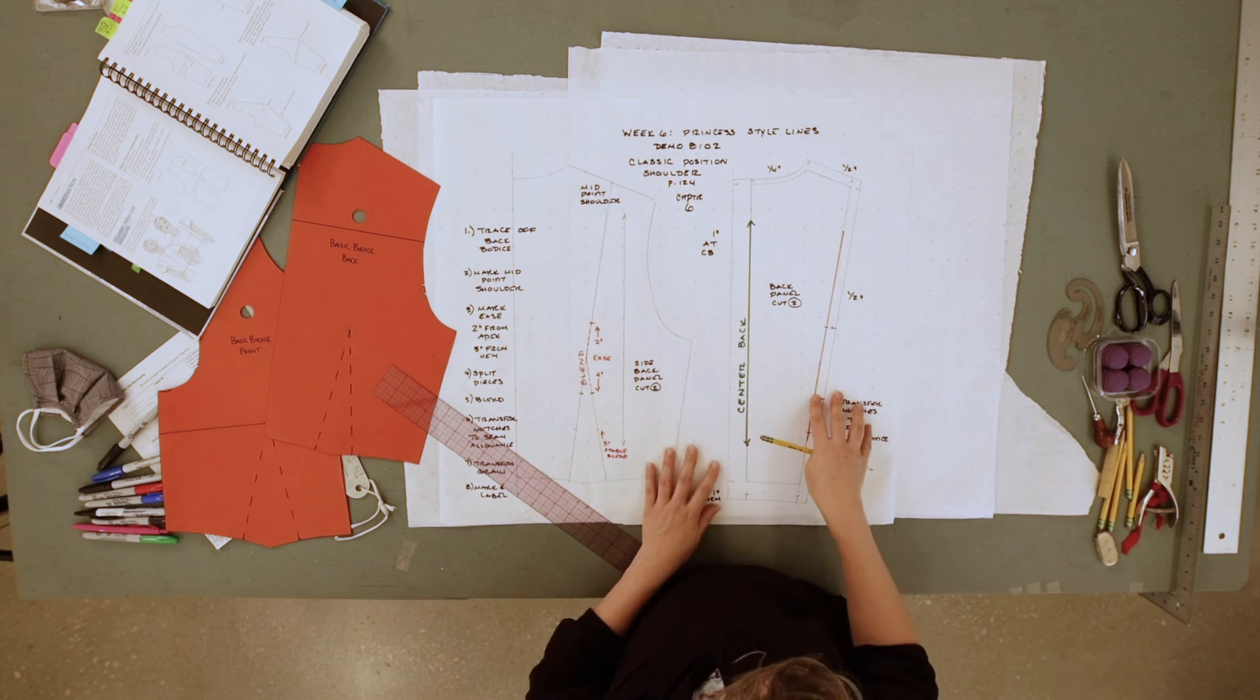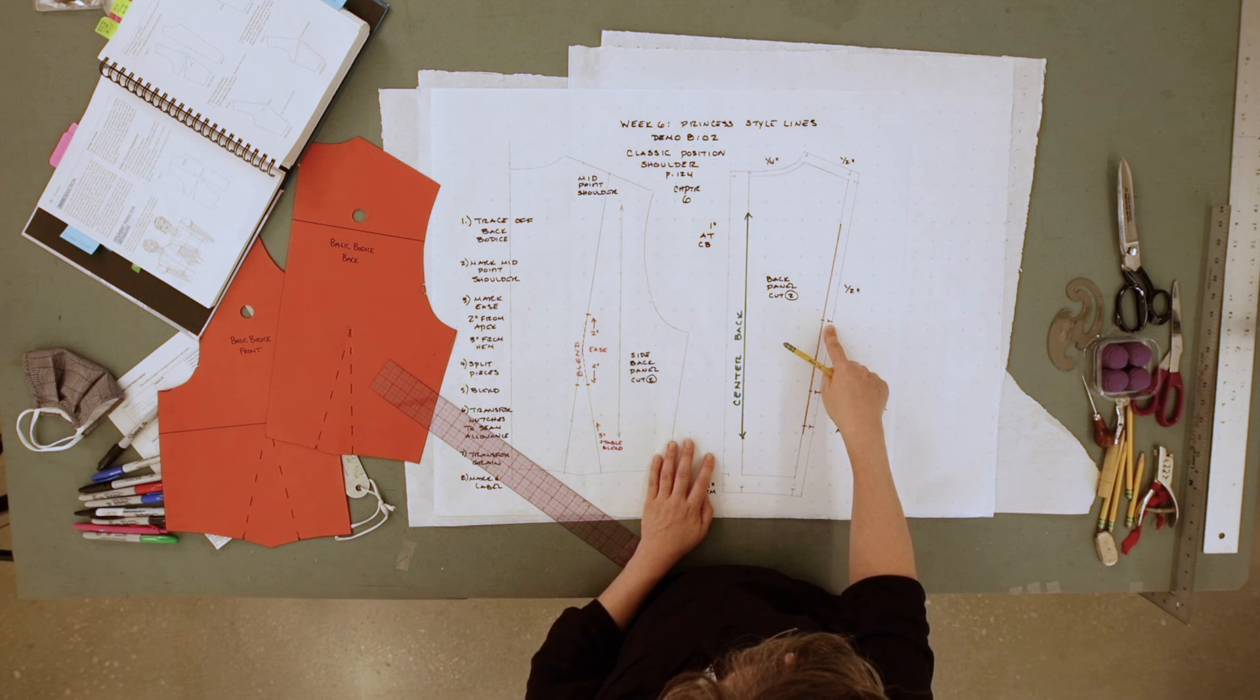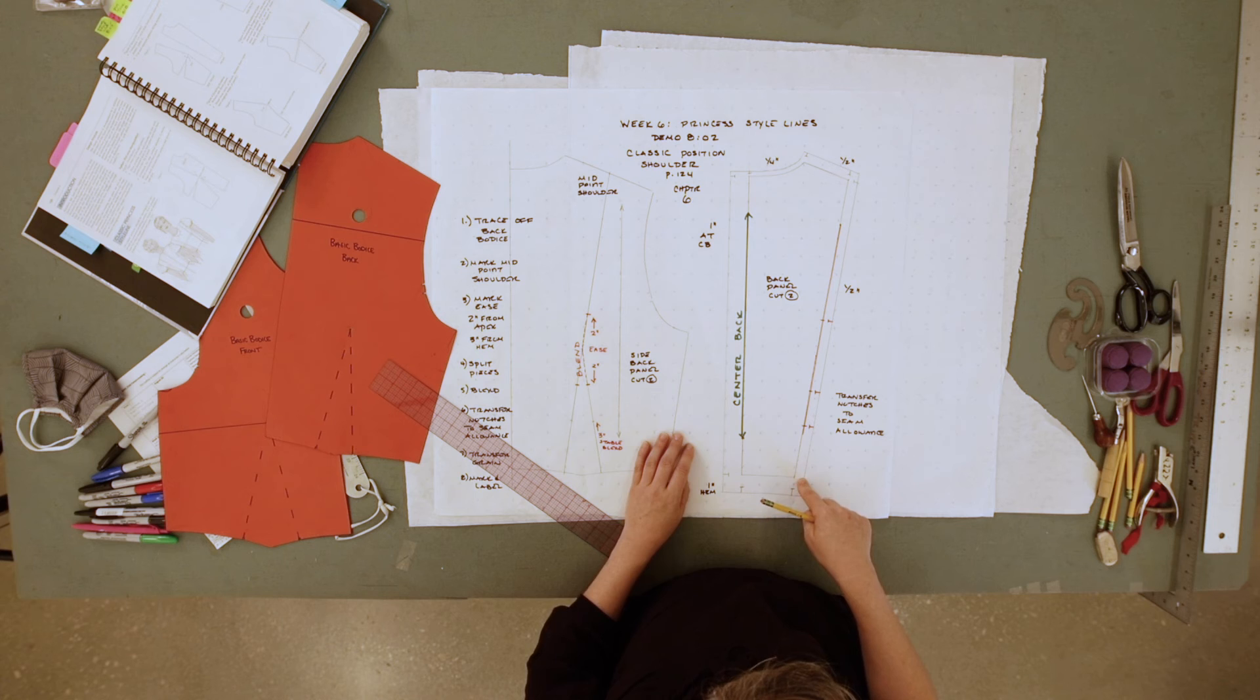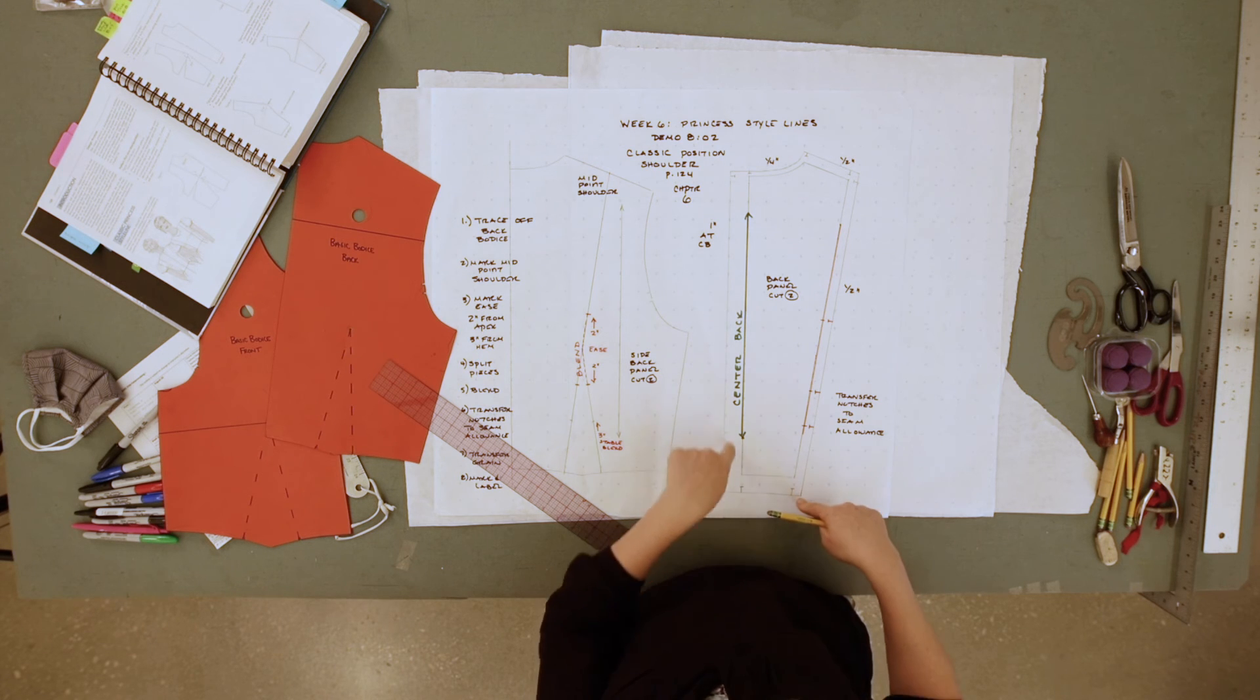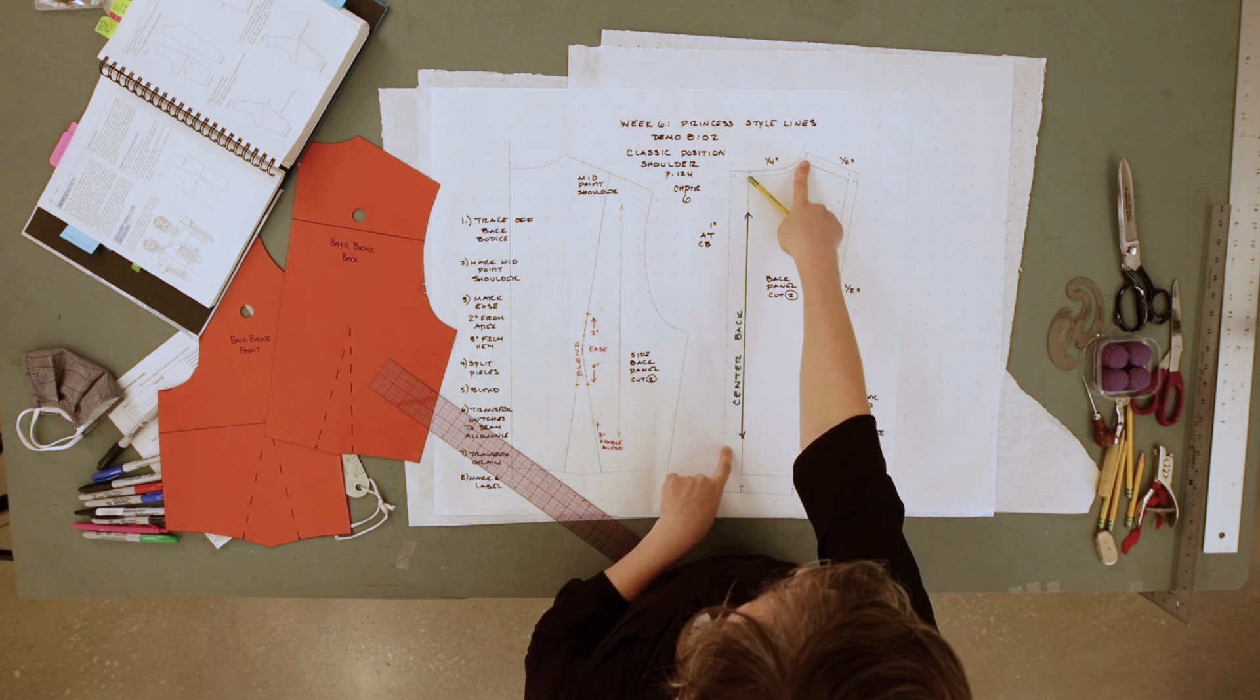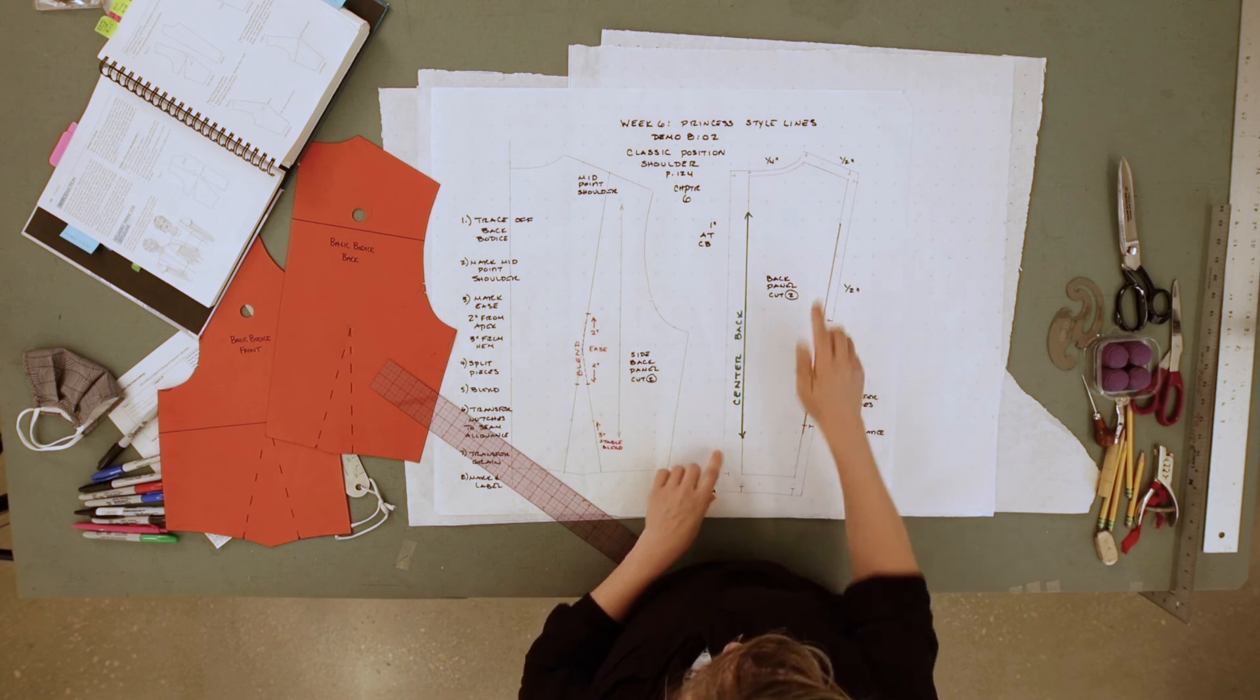As always, we will transfer our notches into the seam allowance, a half inch on each side seam, one inch on the hem, one inch now on the center back to allow for that zipper, a quarter inch at the neck, a half inch at the shoulder seam, labeling.